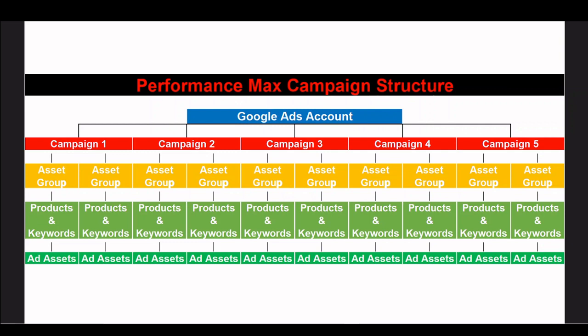So going back to the image in front of us, beneath the asset groups are the products and/or keywords. We've got our 24k gold asset group — within that we select all our 24k gold products. Then we get on to the ad assets: these are your headlines, long headlines, descriptions, images, and videos. Because our asset group is so niche, we don't need to create five generic headlines such as 'view our line of products' or 'free delivery'. We can expect a much greater click-through rate with headlines like '24k gold necklaces' or '24k gold necklaces from £1,000'. You may only have five photos of your 24k gold necklaces — that's still better than having 20 images of all your products across one campaign where you don't know which is going to show up.